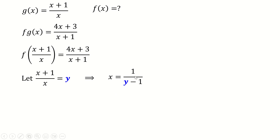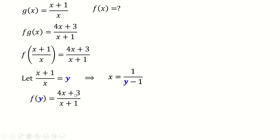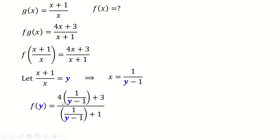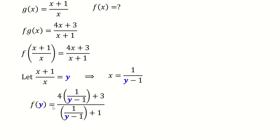Now we substitute x = 1/(y−1) into the composite function. Since x+1)/x = y, we replace x with 1/(y−1) in fg(x) = (4x+3)/(x+1), giving us 4·(1/(y−1)) + 3 in the numerator and 1/(y−1) + 1 in the denominator.